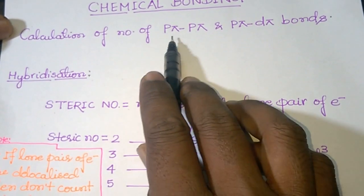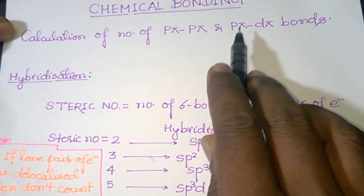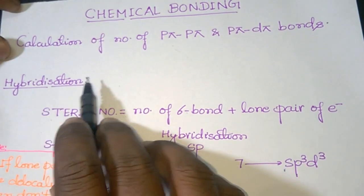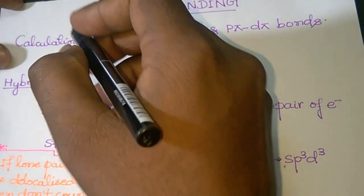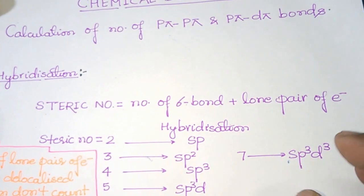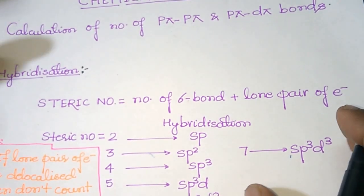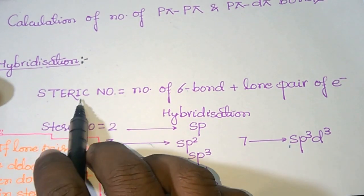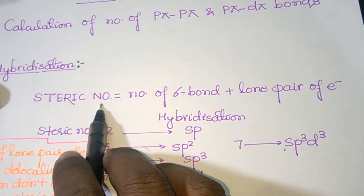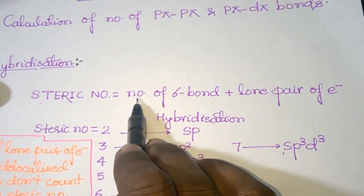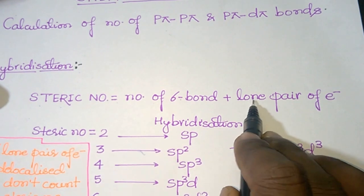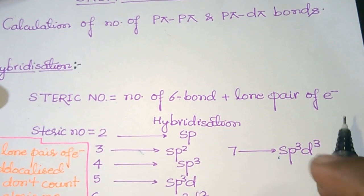For the calculation of p pi-p pi bonds and p pi-d pi bonds, you need to know first about hybridization and how to calculate it. The basic concept is that you have to calculate the steric number, which is the number of sigma bonds plus lone pairs of electrons on the central atom.